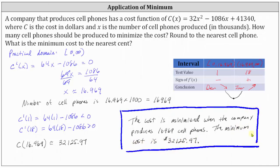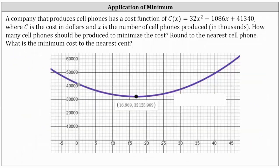Before we go, let's verify this graphically. Here we have the graph of the cost function — a parabola that opens up. We found the vertex using calculus techniques, where x is approximately 16.969, representing 16,969 cell phones, and the function value represents the minimum cost of $32,125 and approximately 97 cents.